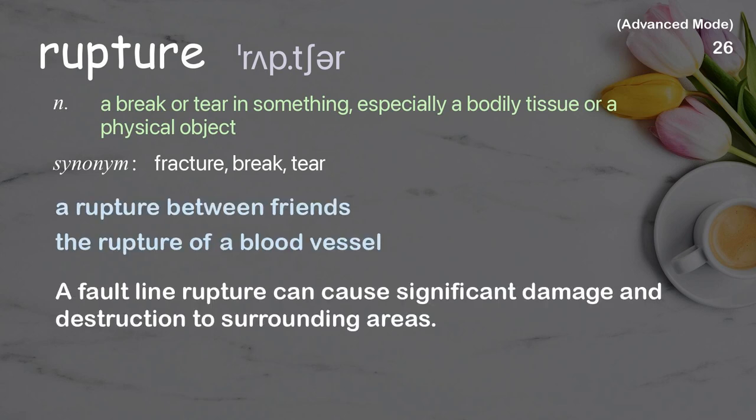Examples: a rupture between friends, the rupture of a blood vessel. A fault line rupture can cause significant damage and destruction to surrounding areas.